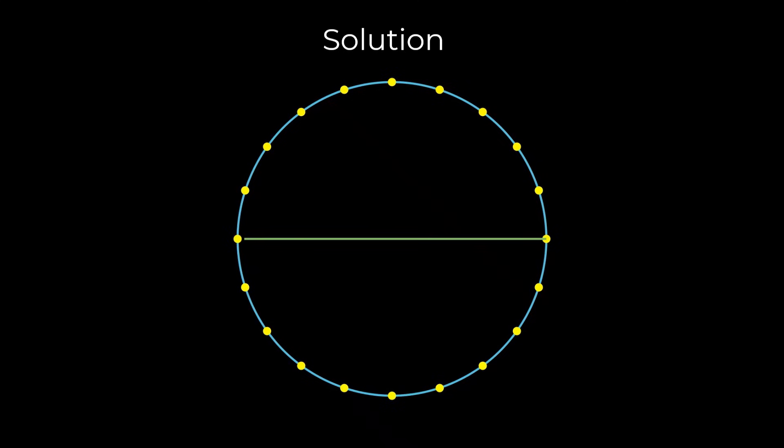After that, whenever Bob draws a chord, Alice mirrors his chord across this diameter. This ensures that after each of Alice's turns, the configuration remains perfectly symmetric about the diameter. As a result, whenever Bob has a valid move, Alice will also have one.